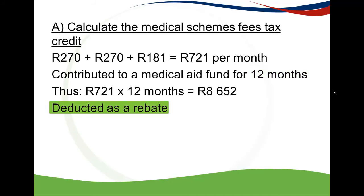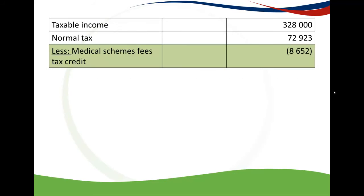This amount is deducted as a rebate. Remember, a rebate is a deduction against your normal tax — it is not a deduction in your taxable income. To put it in perspective: you take your taxable income, from that you calculate your normal tax (refer to the podcast on how to calculate tax using the tax tables), and then you deduct your age rebates. After that, you deduct your medical schemes fees tax credit as calculated.